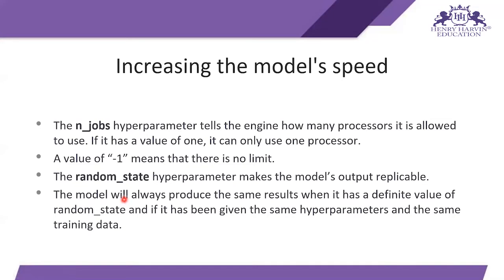The random_state hyperparameter makes the model output replicable — the model will always produce the same result when given a definite random_state value and the same training data. For example, if you and your friend are both making a model on the same dataset and want to compare outputs, you can use random_state so the data splits in the same way for both of you, allowing a fair comparison.